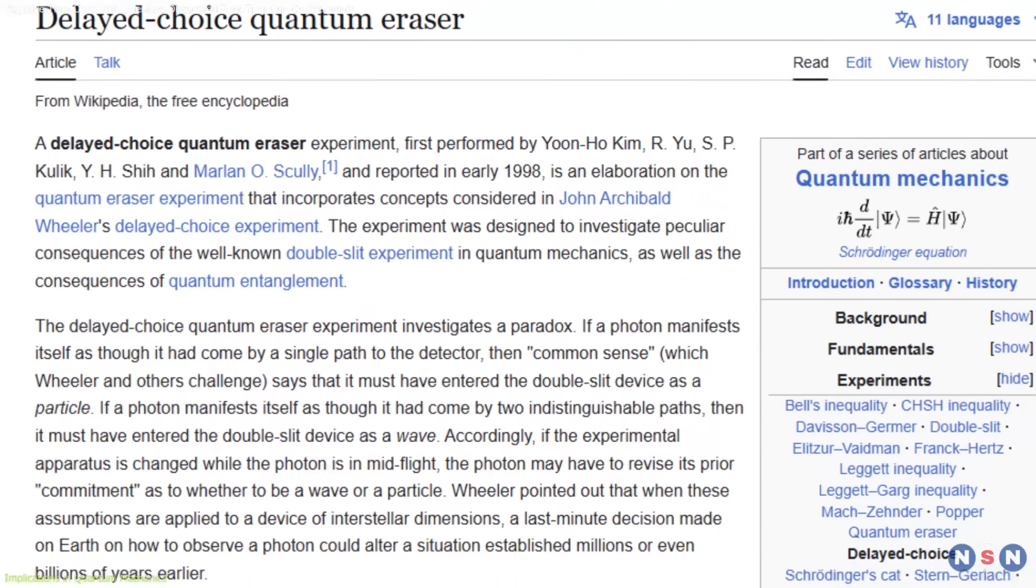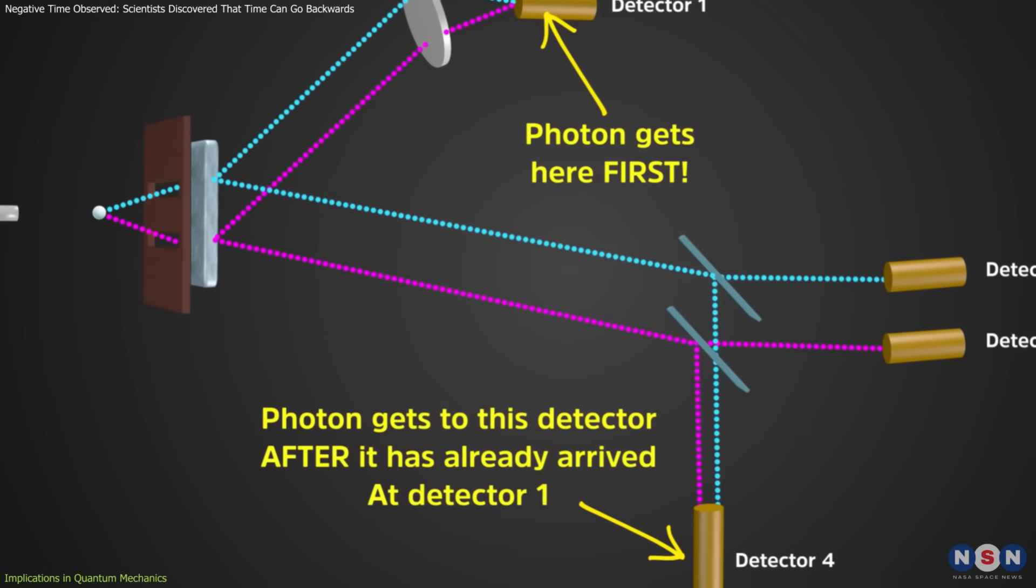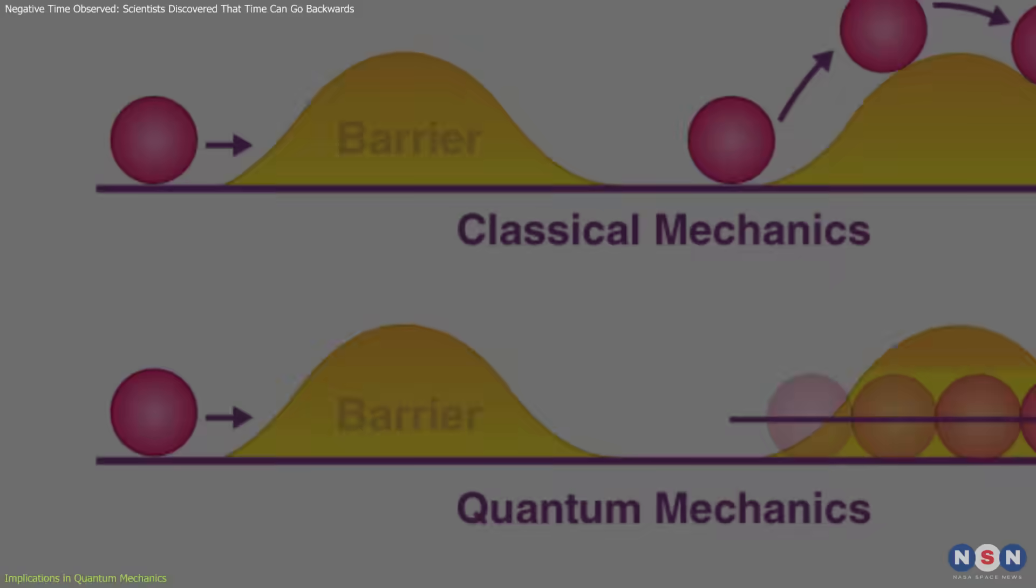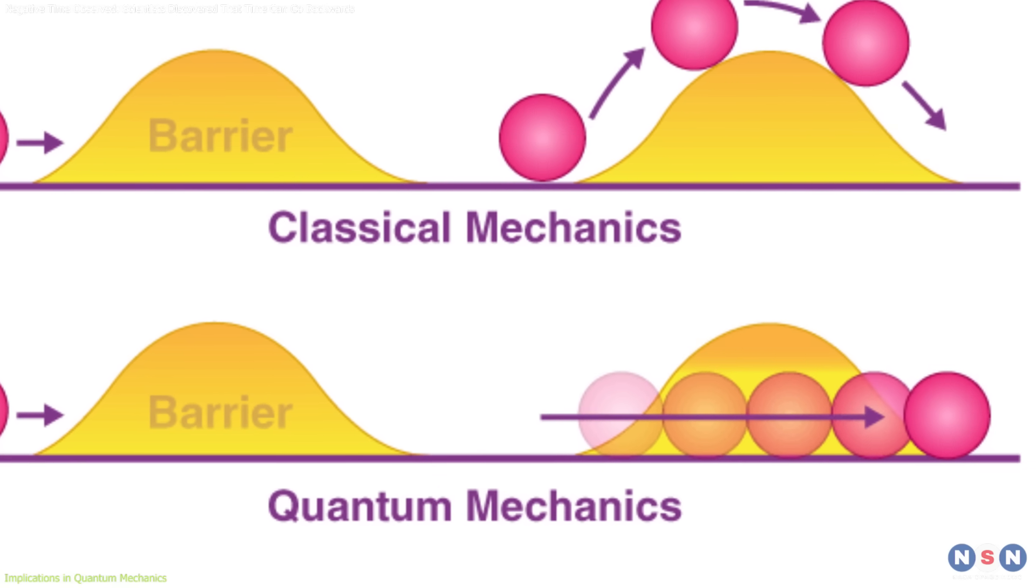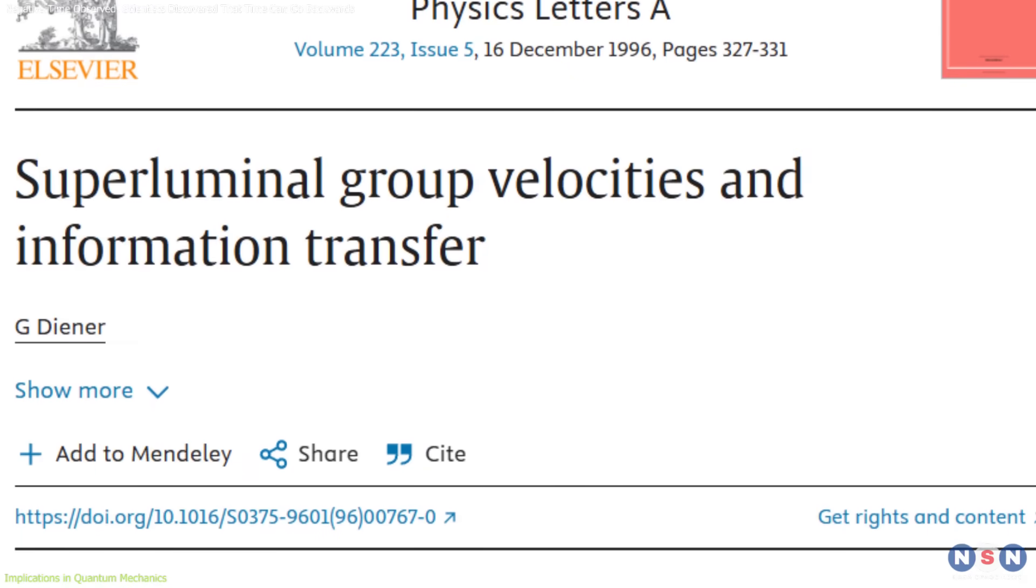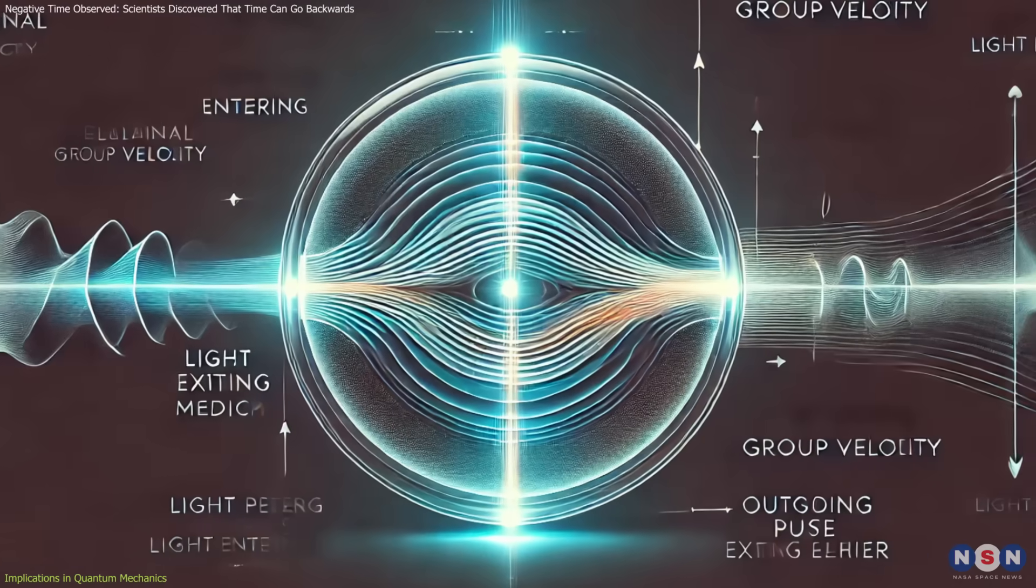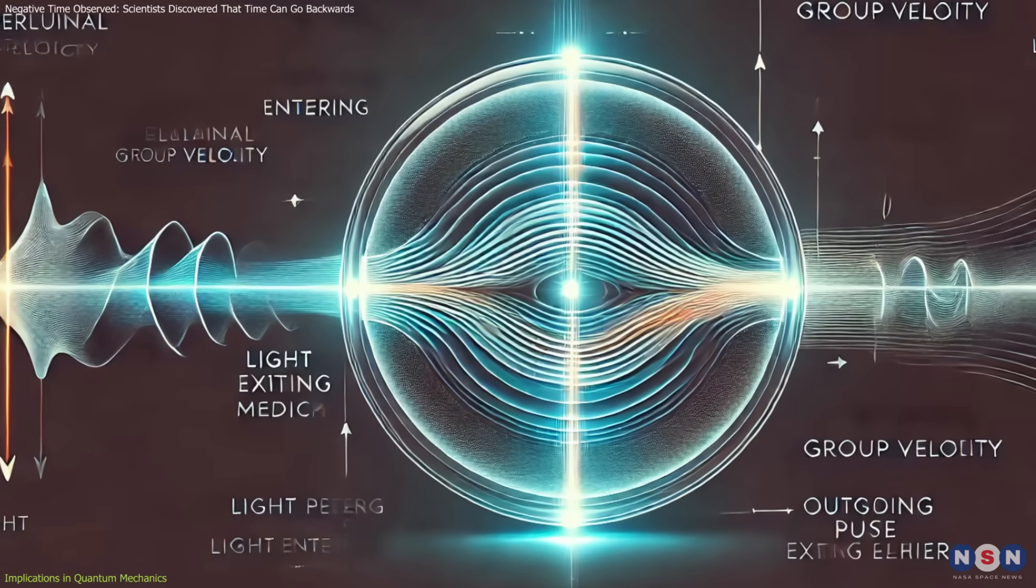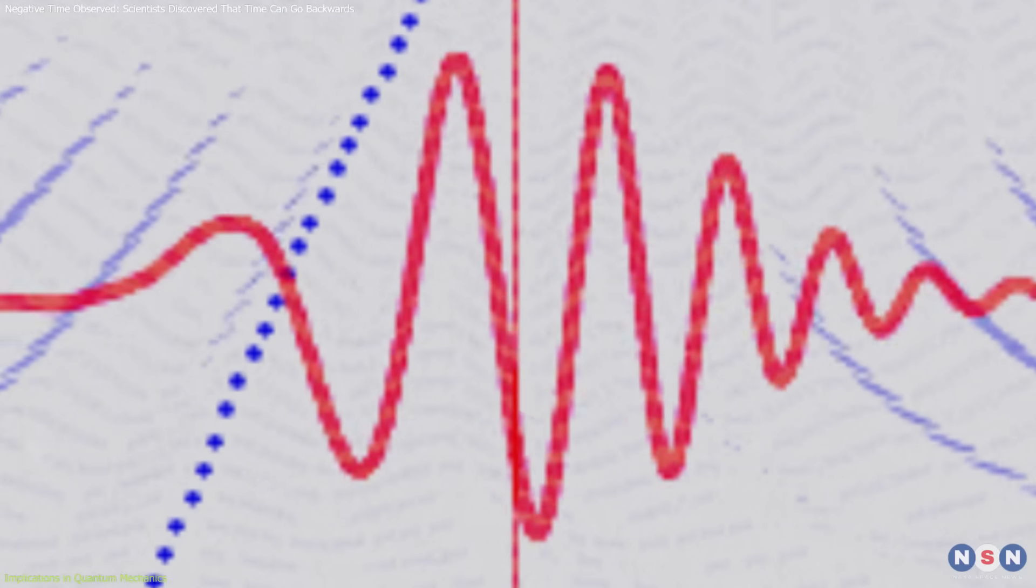The Delayed Choice Quantum Eraser experiment, for example, revealed that decisions made in the present can influence the past states of particles. Similarly, quantum tunneling demonstrates that particles can instantaneously pass through barriers, challenging our classical understanding of time and space. Another fascinating connection is the study of superluminal group velocities, where light waves appear to exit a medium before entering. While this doesn't violate causality, it reveals how wave functions and phase shifts can produce seemingly paradoxical results.